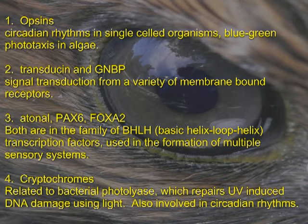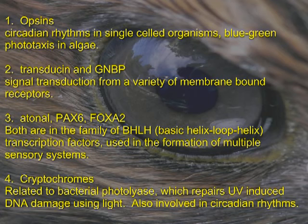Part 4: All genes should have a plausible explanation for alternative functions. Here's a list of genes and their paralog functions. Opsins, for example, have functioned in circadian rhythms in single-celled organisms, and they're responsible for some blue-green phototaxis in algae. Transducins and GNBPs are both signal transduction cascade proteins that interact with a number of different membrane-bound receptors.